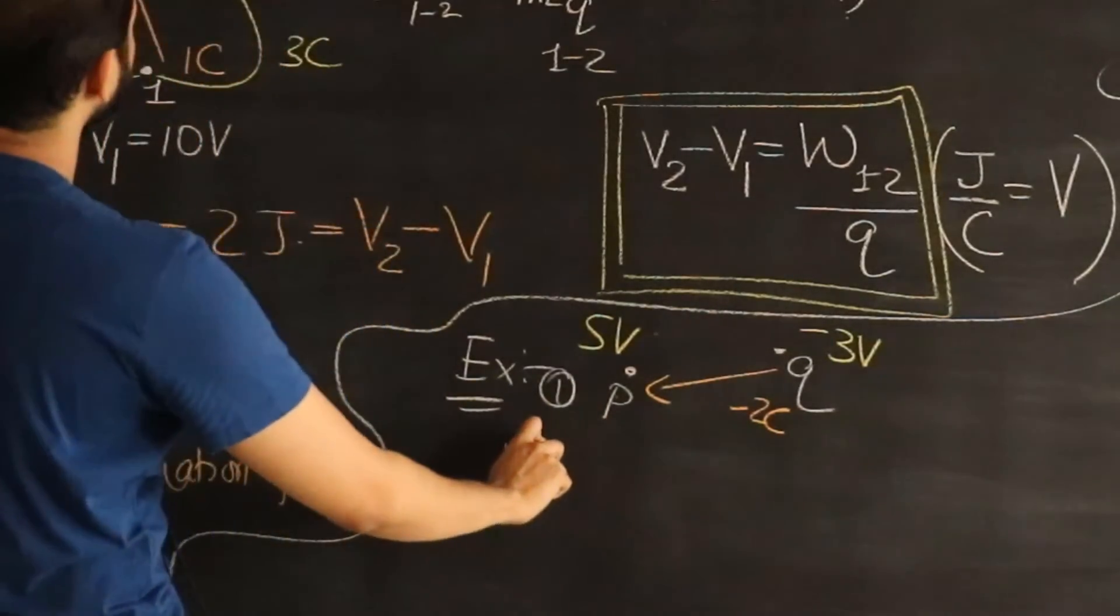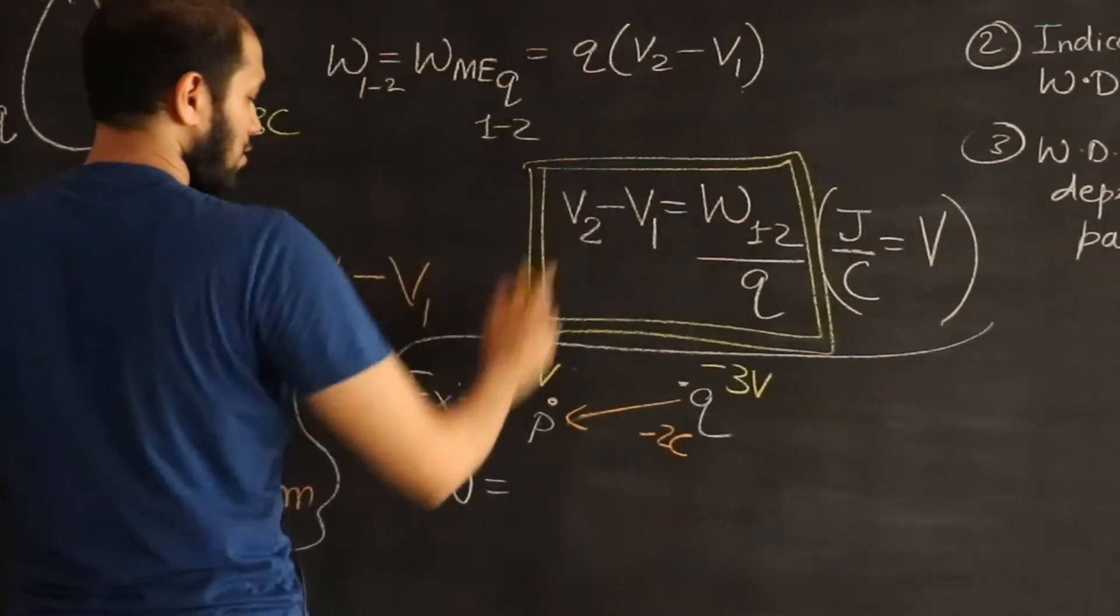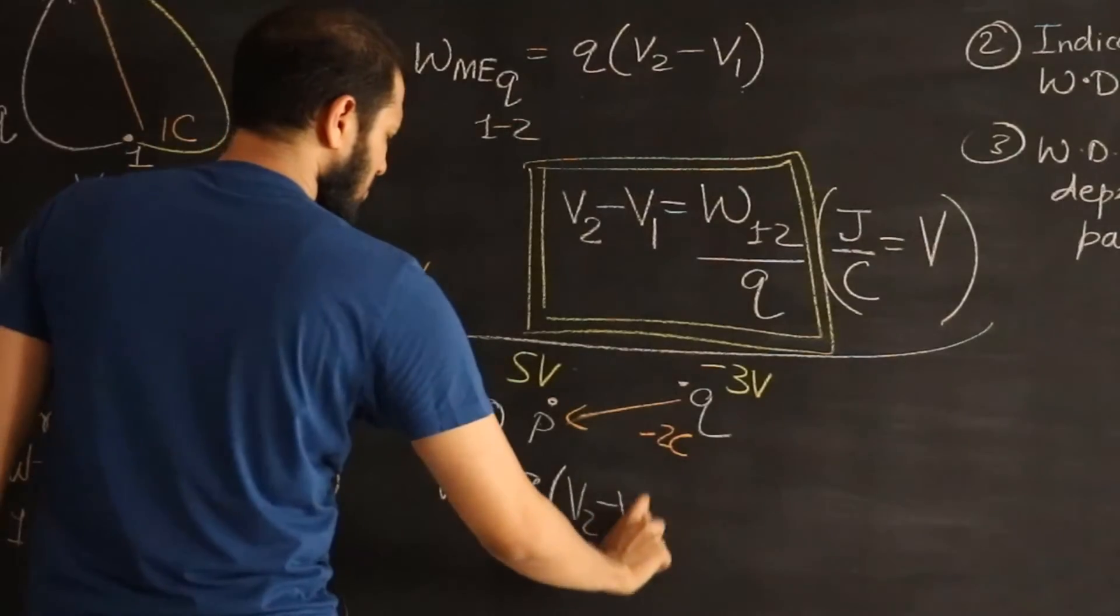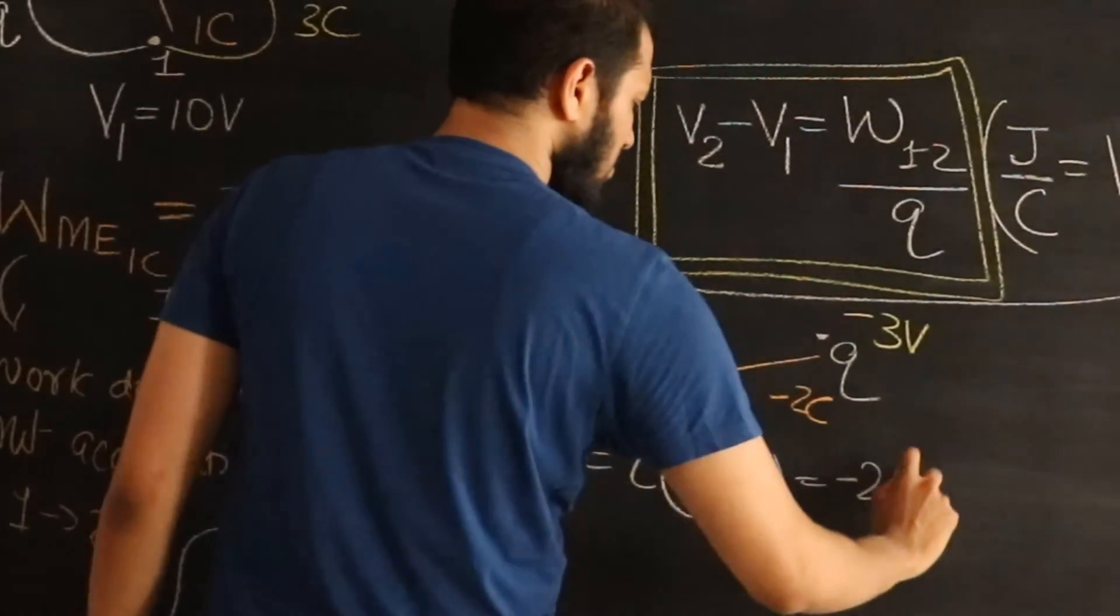So the first example. Work done. Work done by me to move this charge. I would use this one. It's always going to be Q into V2 minus V1. The charge we are moving is minus 2 coulombs. Minus 2.